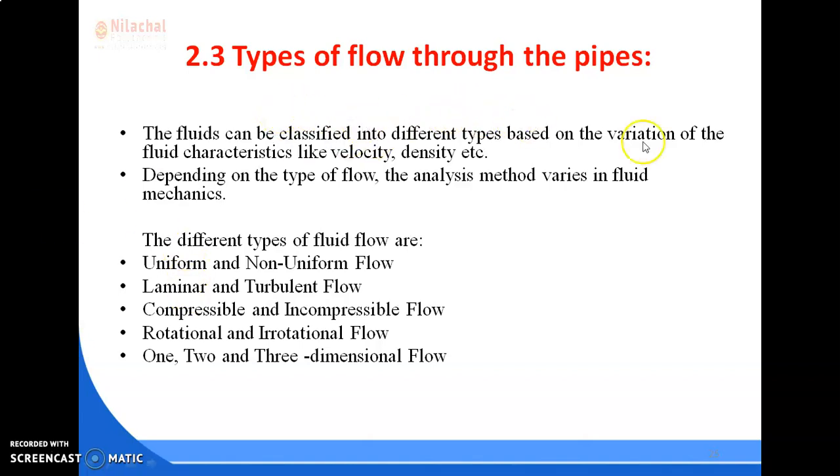Let's discuss another article. This is types of flow through the pipes. The fluids can be classified into different types based on the variation of the fluid characteristics like velocity, density, etc. These are the different types: uniform, non-uniform, laminar, turbulent, compressible, incompressible, rotational and irrotational. Last one is 1, 2 and 3 dimensional flow. Let's discuss one by one.